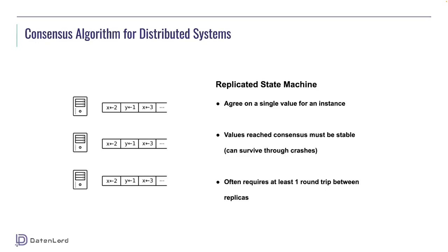Because the distance between nodes is quite long, geo-distributed systems have relatively high latency between replicas. We often abstract a distributed system into a replicated state machine. Since it is replicated, all the nodes have the same content on them. The consensus algorithm, or consensus protocol, is how we achieve agreement on a single value for an instance in a cluster. Once a value is reached consensus, it must be stable so it can survive crashes.